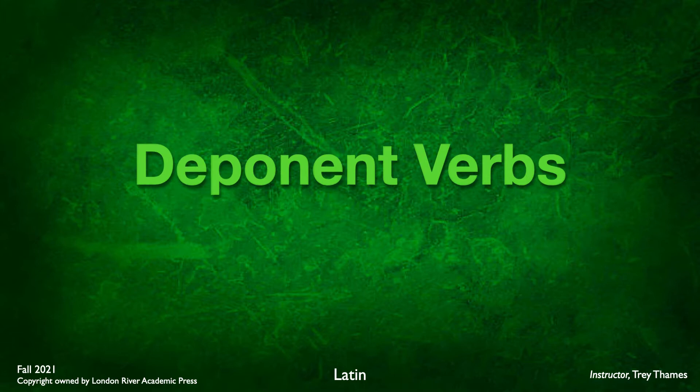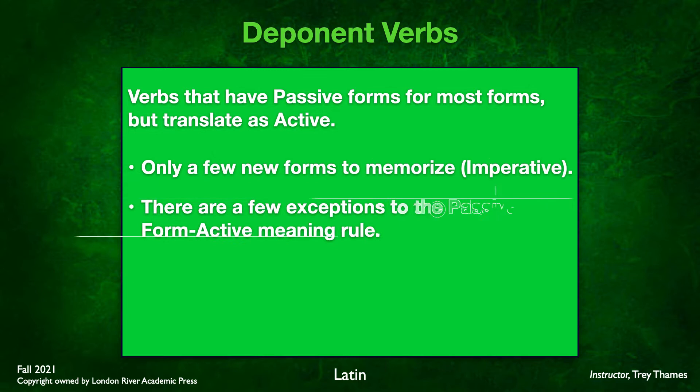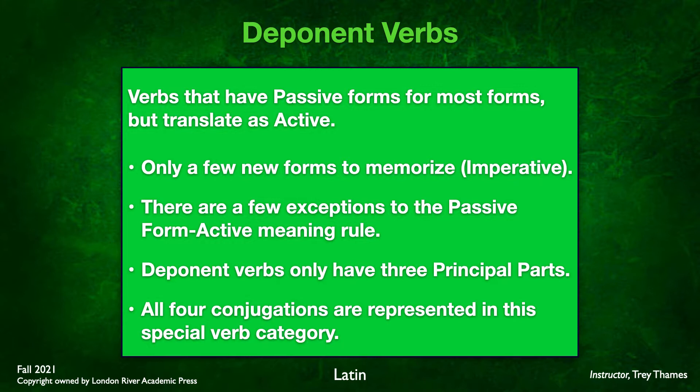Let's take a look first at deponent verbs. What is a deponent verb? A deponent verb is a verb that has a passive form in most forms, but will translate as active. A couple of things to keep in mind: there are only a few new forms here that we need to memorize. Basically, our imperative will be new forms — everything else will be forms we've already learned. There are a few exceptions to the passive form, active meaning rule, which we'll look at in just a minute.